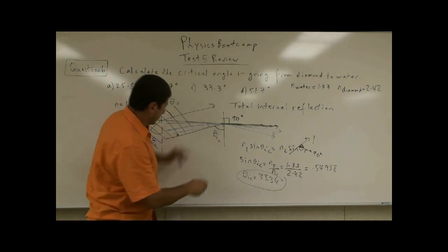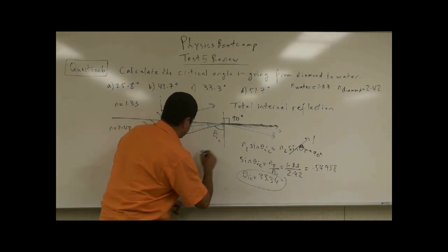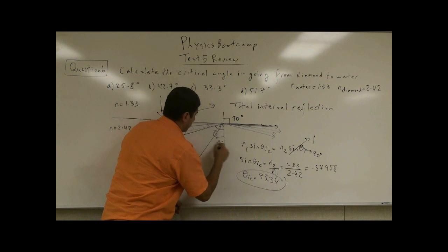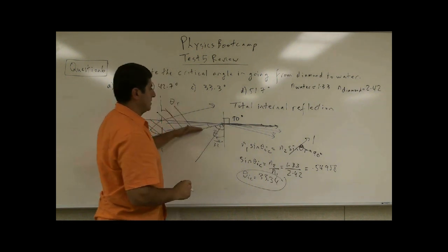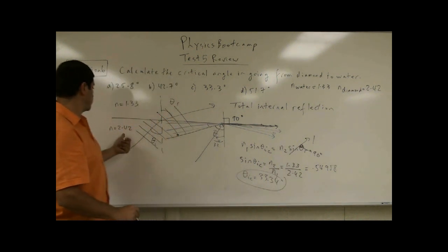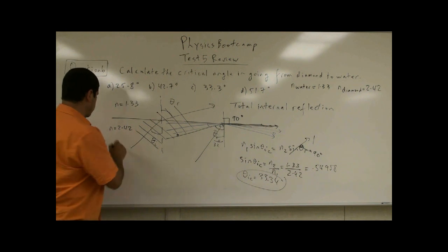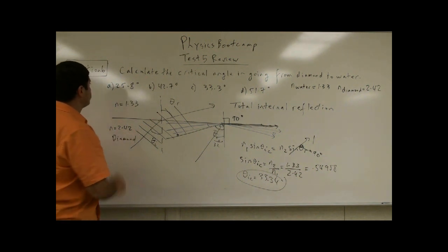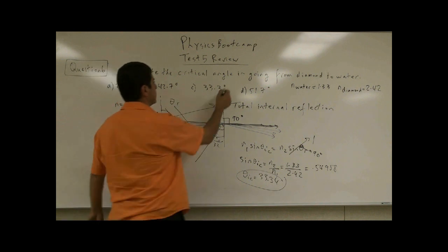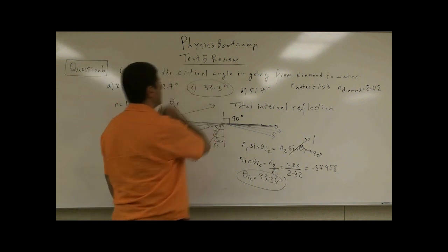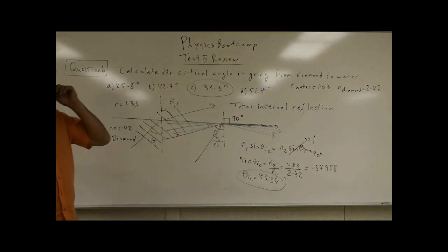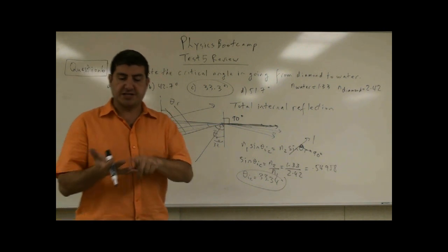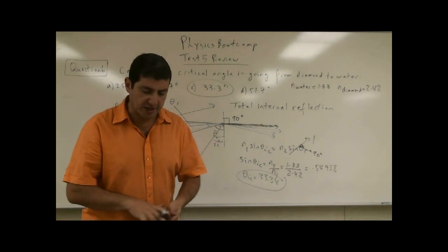So anything more than 33 degrees, the light is going to stay in the diamond. The answer is C. This is actually very important technology because it's the technology behind fiber optics.